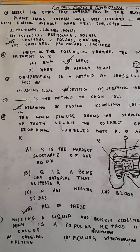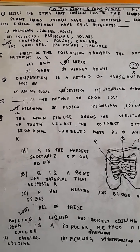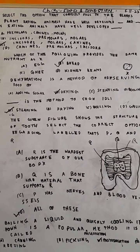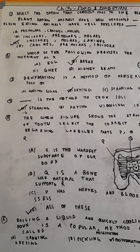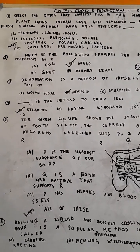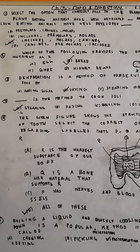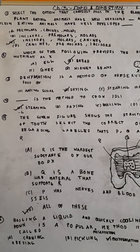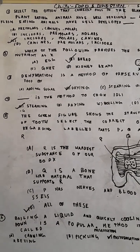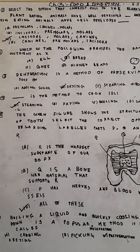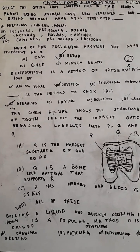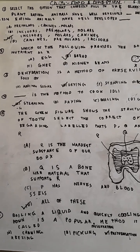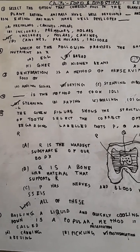The first question is: select the correct option that correctly fills in the blanks. Plant eating animals have well developed dash and dash; flesh eating animals have well developed dash. Plant eating animals have well developed incisors and molars to tear food easily, and flesh eating animals have well developed canines to tear their flesh. So the correct option is option C: incisors, molars, canines.